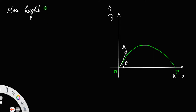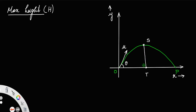The maximum height we represent as h. This maximum height means the maximum vertical distance covered by the projectile during its motion. If I call this point as S and this point as T, then the distance ST is the maximum vertical height covered by the projectile, and that will be our height h.